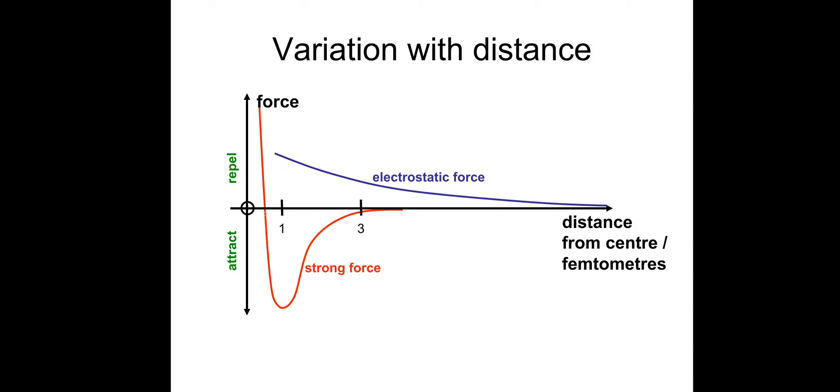Then greater than 0.5 femtometers onwards, the strong nuclear force becomes attractive. That's this region of the graph. And that's to stop the electrostatic force from tearing the nucleus apart. You could be asked to sketch this graph in a test as well. So maybe sketch this down and learn it.